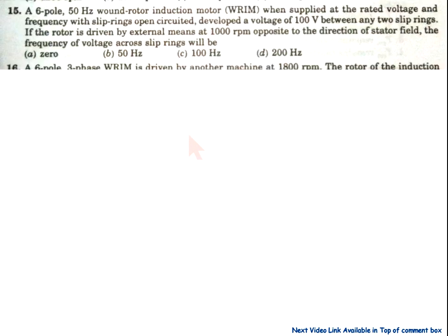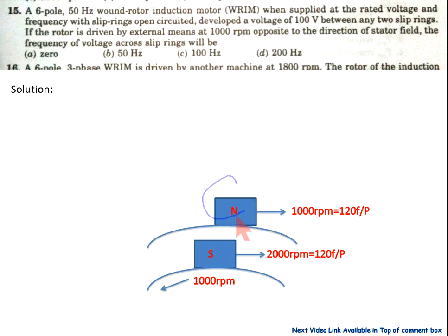Question number 15: A 6-pole 50 Hz wound rotor induction motor, supplied at rated voltage and frequency with slip rings open-circuited, develops a voltage of 100 V at any slip ring. If the rotor is driven by external means at 1000 RPM in the opposite direction to the stator magnetic field — this is the important condition. The frequency of voltage across the slip rings will be. The stator magnetic field rotates at 1000 RPM (from 120·f / P = 120×50/6). The rotor is also rotating at 1000 RPM in the opposite direction.